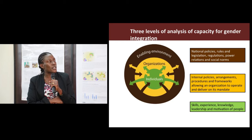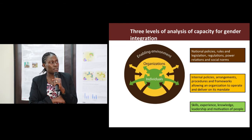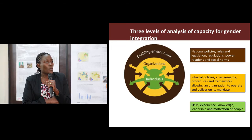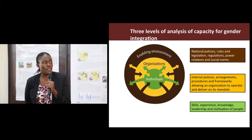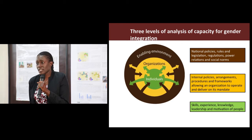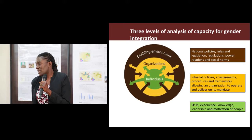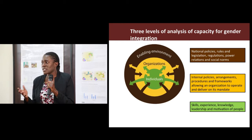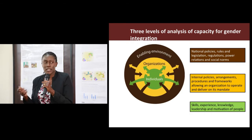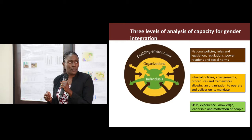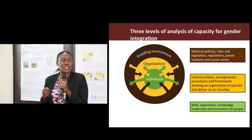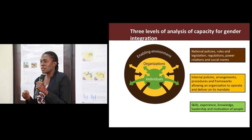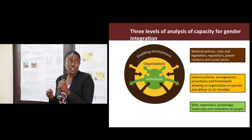This next slide presents the different levels of analysis. We do not look at individuals alone, but look at the organisation as a whole, and also the environment around us. When looking at individuals, we assess the skills, the knowledge, and their motivation to integrate gender in their work. Within the organisation, how do the internal policies, procedures, or arrangements enable individuals, or hinder them, to deliver on their mandate? How about the enabling environment at national level — how do the policies and regulations enable an institution to deliver on the gender equality goal?